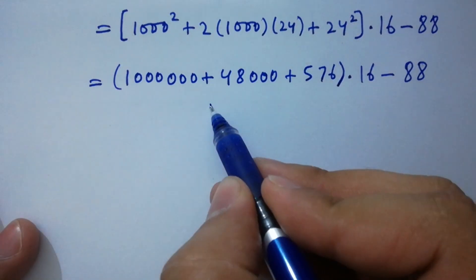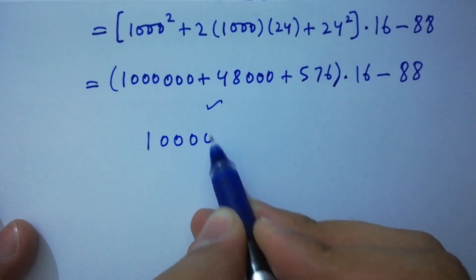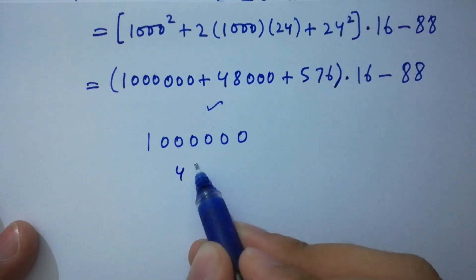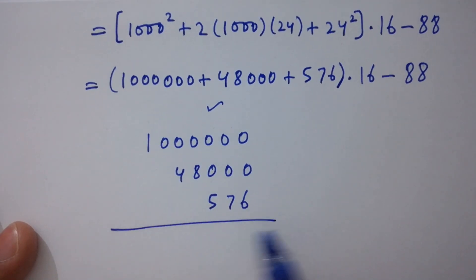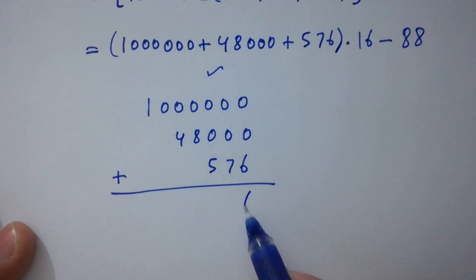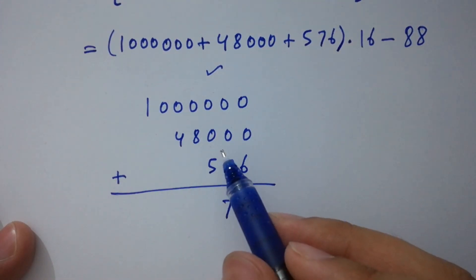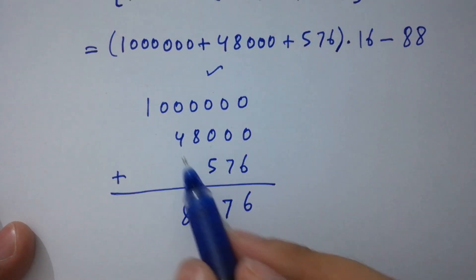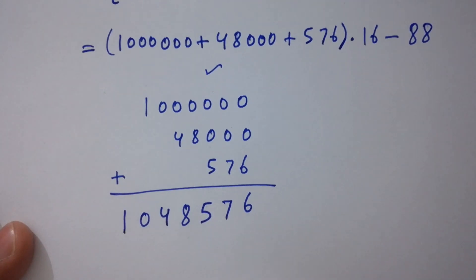Adding 1,000,000 plus 48,000 plus 576: we get 6, 7, 5, 8, 4, 0, 1 — that is 1,048,576. Now I am going to multiply it by 16.